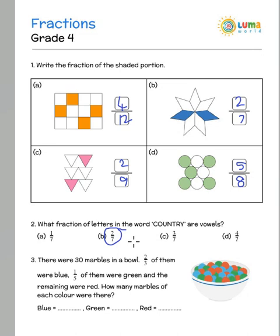There were 30 marbles in a bowl. 2 by 3 of them were blue. So 2 by 3 of the total which is 30. So it is 60 divided by 3 which gives us 20.